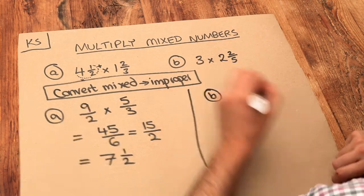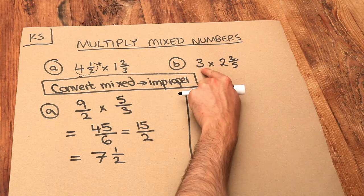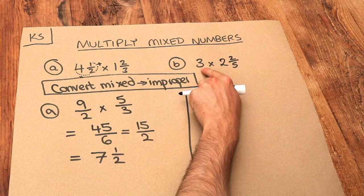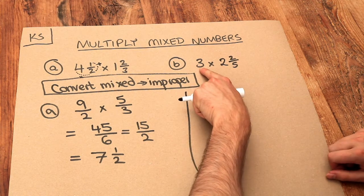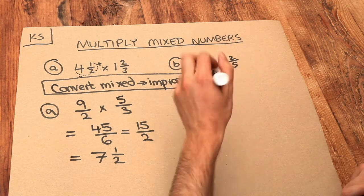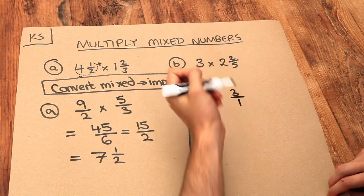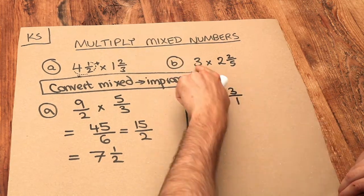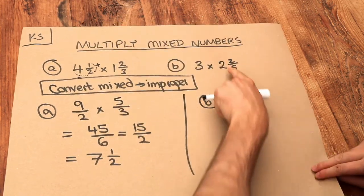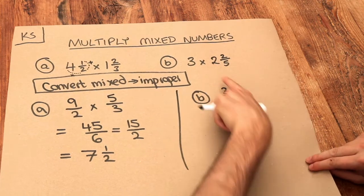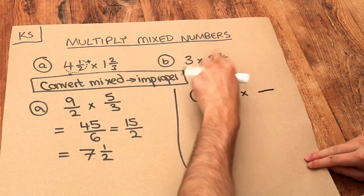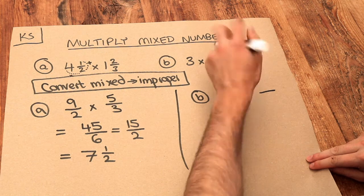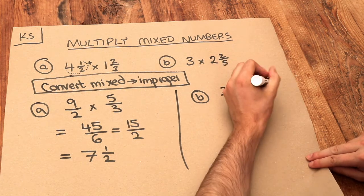What about B? This time we've got a whole number. Whenever that happens, just write it over one. We're going to put three over one because three divided by one is three. Then we convert the mixed number to an improper fraction: two times five is ten, plus two is twelve, over five.